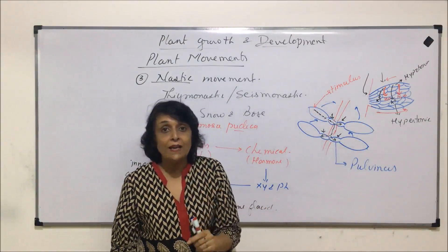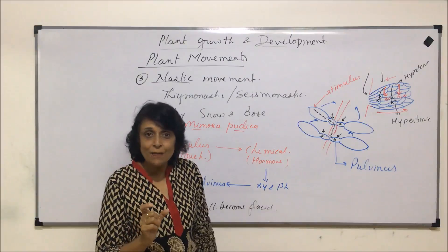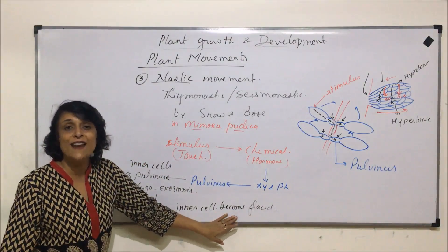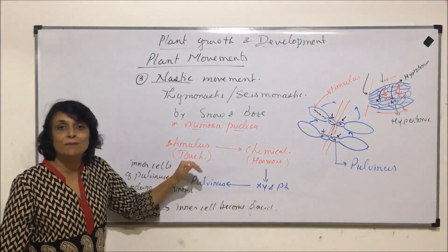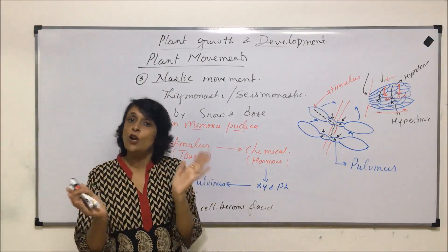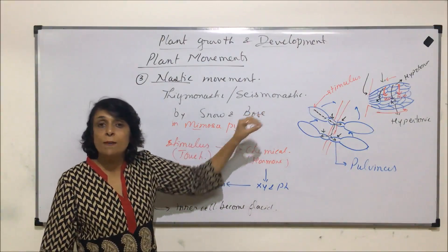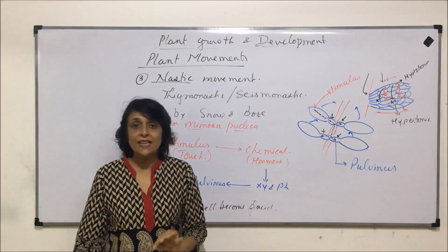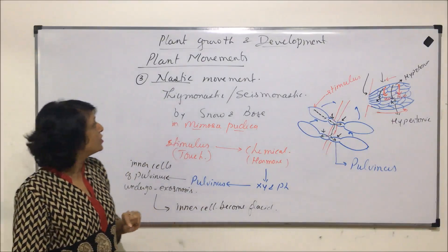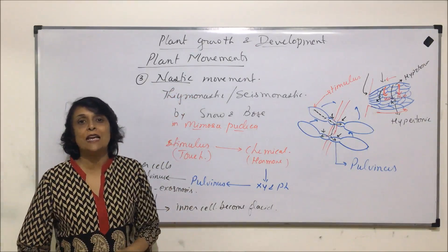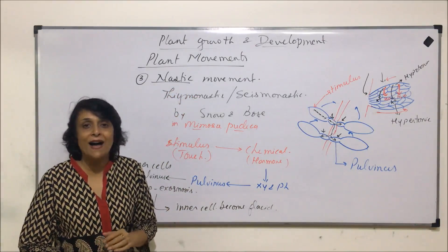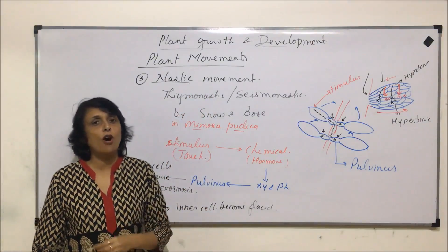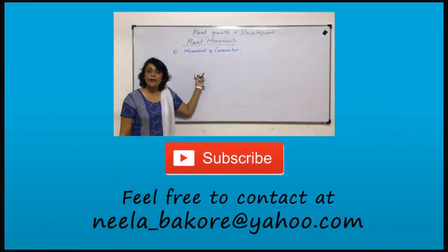As the inner cells become turgid they begin to stretch, and the leaves which were closed will open up again. The inner cells which became flaccid regain water, become turgid, and the leaves open up. This is the complete process as explained by Snow and Bose. We are now done with all types of movements shown by plants in response to various internal or external stimuli.